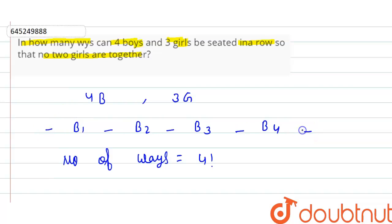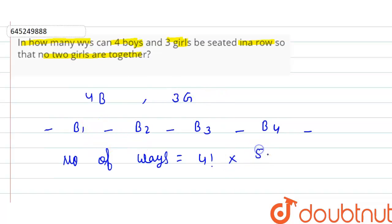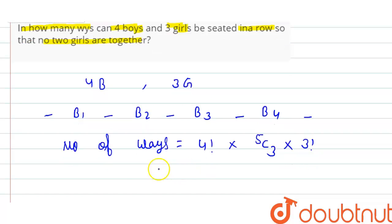Now, with four boys seated, there are five spaces — one, two, three, four, five — between and around them. If we arrange the three girls in these spaces, no two girls will be together. So we choose three spaces out of five: that gives us 5C3. We also need to arrange the three girls, which can be done in 3! ways.